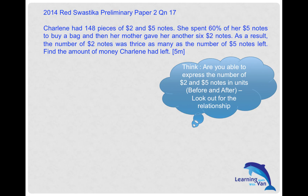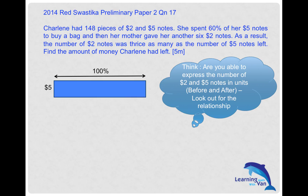Let's concentrate on the $5 notes. Originally, $5 notes must be 100%. She spent 60% of that. What is left? It must be the remaining number of $5 notes — 40% is left with regards to the original amount.